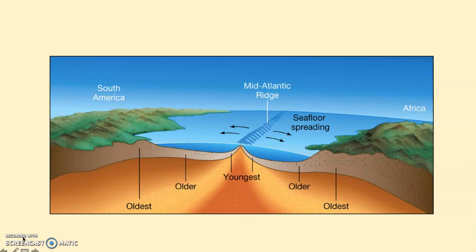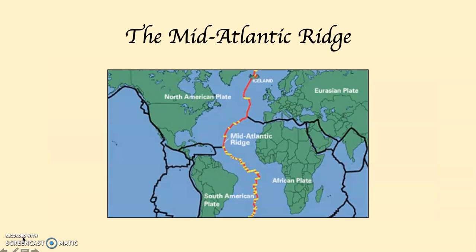Take a look at this diagram. You can see the Mid-Atlantic Ridge in the Atlantic Ocean, seafloor spreading, the crust pulling apart, and along the ocean bed you can see the oldest rock right along the continental shelves. Notice how the east coast of South America, the west coast of Africa, and even North America and Europe are mirrored by the Mid-Atlantic Ridge.